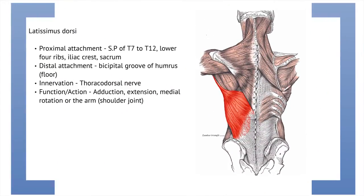Let's start with the latissimus dorsi muscle. Its proximal attachment is the spinous processes of T7 to T12, as well as the lower four ribs, iliac crest and the sacrum. This means there are different parts of this muscle, so just be aware of that. Its distal attachment is the floor of the bicipital groove of the humerus.